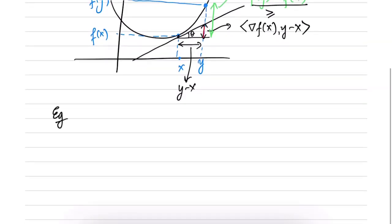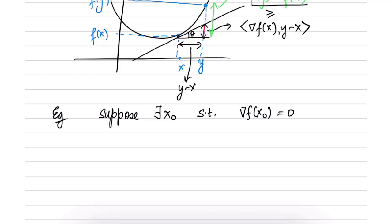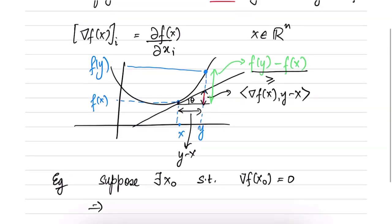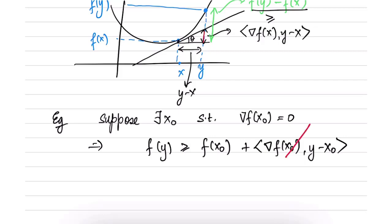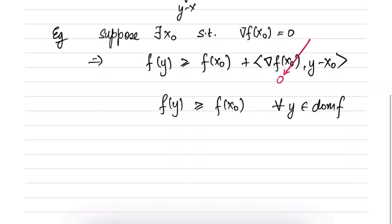We can derive global properties from the first order condition. Suppose there exists a point x0 such that the gradient of f at x0 equals 0. Then from the first order condition, f(y) is greater than or equal to f(x0) plus the inner product of gradient f(x0) with y minus x0. Because the gradient is 0, this term vanishes, so f(y) is greater than or equal to f(x0) for all y in the domain of f. This implies x0 is the argmin of f.